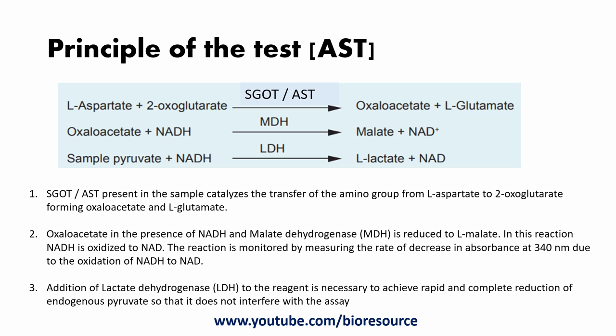Regarding the principle of the AST test: the SGOT or AST present in the sample catalyzes the transfer of an amino group from L-aspartate to oxoglutarate, forming oxaloacetate and glutamate. The oxaloacetate in the presence of NADH and malate dehydrogenase is reduced to malate; in this reaction NADH is oxidized to NAD. The reaction is monitored by measuring the rate of decrease in absorbance at 340 nanometers due to the oxidation of NADH to NAD. The addition of lactate dehydrogenase to the reagent is necessary to achieve rapid and complete reduction of endogenous pyruvate so that it does not interfere with the assay.